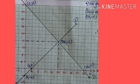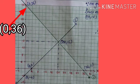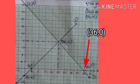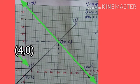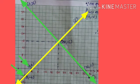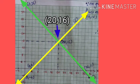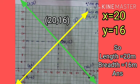On graph paper, the first point (0, 36) lies on the y-axis and (36, 0) lies on the x-axis — join these to draw equation 1. For equation 2, (0, −4) is on the y-axis and (4, 0) is on the x-axis — join these to draw equation 2. Both lines intersect at point (20, 16), so x = 20 and y = 16. Therefore, the length of the garden is 20 metres and the breadth is 16 metres.